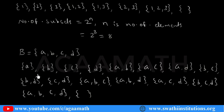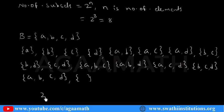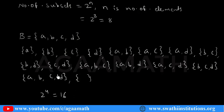So have we listed every possible subset? To verify, we use the formula: number of subsets = 2 to the power N, where N is the number of elements in the given set. That means 2 to the power 4, because we have 4 elements, which equals 16. So we should get 16 subsets. Counting them: 1, 2, 3, 4, 5, 6, 7, 8, 9, 10, 11, 12, 13, 14, 15, 16 — yes, we got 16 total. We have listed all possible subsets.